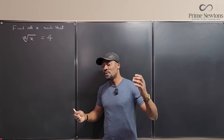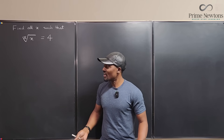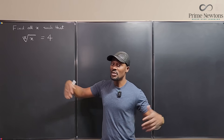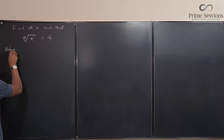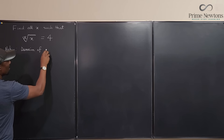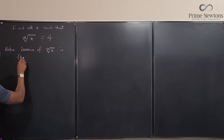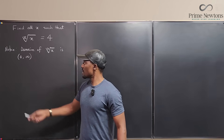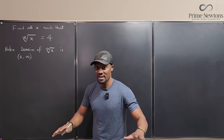First and foremost, we need to know the domain of this function — what values of x can be in the function. We know that you can only plug in values that are greater than 0, and it goes on to infinity. So the domain of the x-th root of x is from 0 to infinity, meaning all the answers we're looking for must be in (0, ∞) — no negative answers.